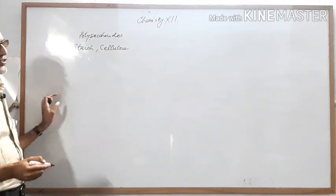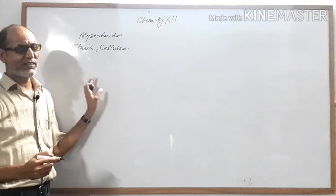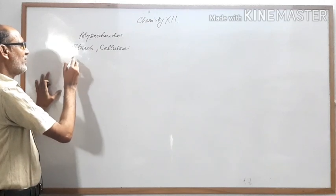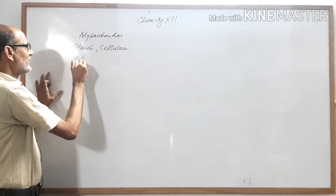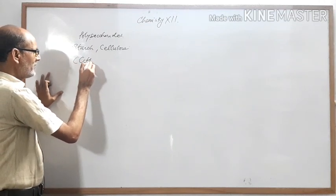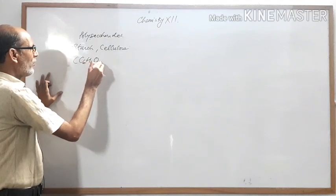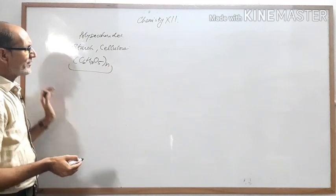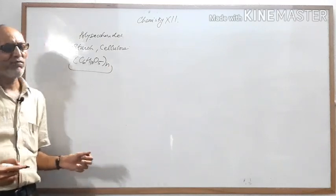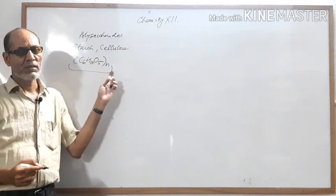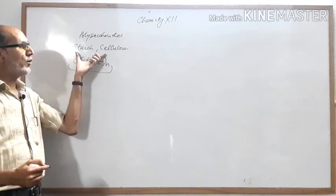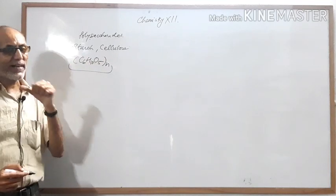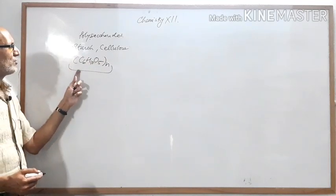This topic has been removed from the NCERT syllabus, but you must know it for competitive and other exams. The formula of starch or cellulose is (C6H10O5)n. Both have the same formula. They are also polymers because a long chain of monosaccharides is attached.